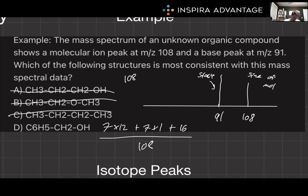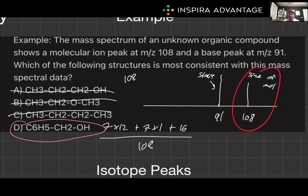So D is our answer — we didn't even have to worry about the base peak in this one, we just cared about the molecular weight. And that's a good way to do it, honestly. The MCAT is not an organic chemistry exam, so take it as easy as possible. Take the easy wins, guess and check, and don't try to reinvent the wheel.